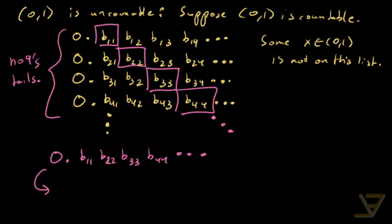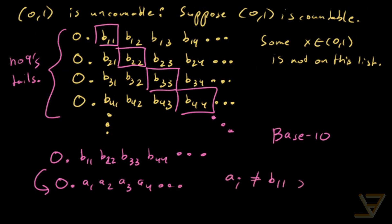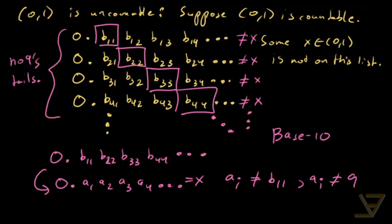If it were binary we could flip easily, but we're using base 10. So we construct 0.a1 a2 a3 a4 such that ai is never equal to bii, and to avoid a tail of nines, ai is also never equal to 9. Then x is not equal to the first element because a1 doesn't match b11, not equal to the second because a2 doesn't match b22, not equal to the third because a3 doesn't match b33, not equal to the fourth because a4 doesn't match b44, and so on. We've found some x in (0,1) that's not on this list, and that is the contradiction we were seeking.